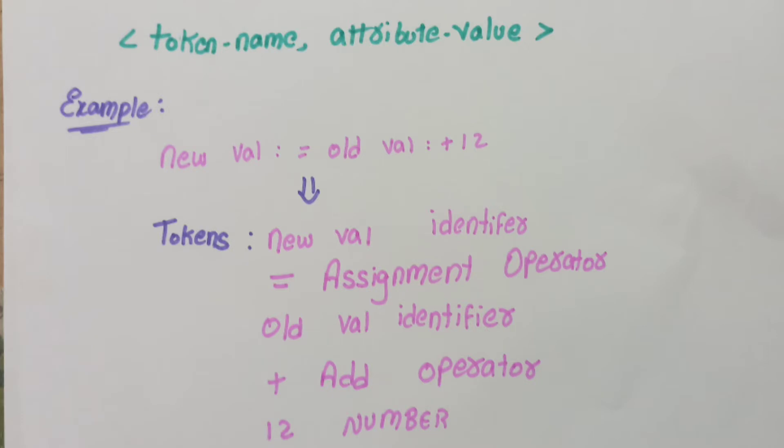Let's look at an example first. New val equals old val plus 12. We will represent this. New val is an identifier, equals to is an assignment operator.